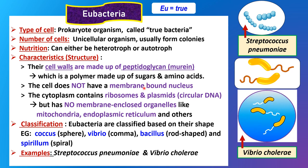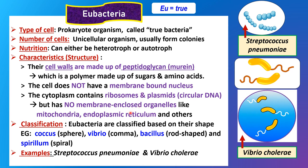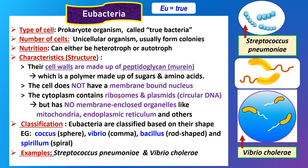The cell does not have a membrane-bound nucleus and contains ribosomes and plasmids — plasmids are circular DNA. But there are no membrane-enclosed organelles such as mitochondria, endoplasmic reticulum, and Golgi apparatus. Ribosomes and plasmids are not membrane-enclosed.